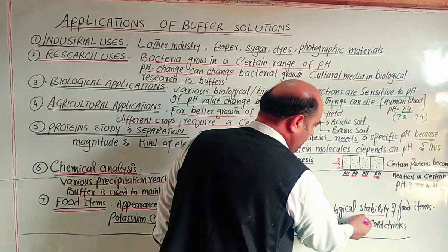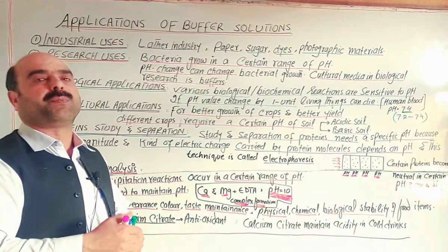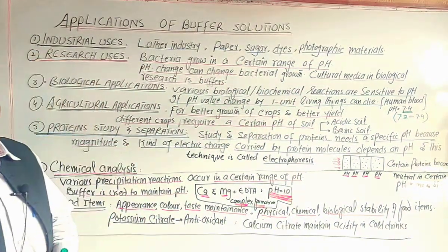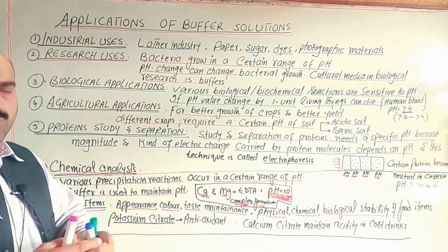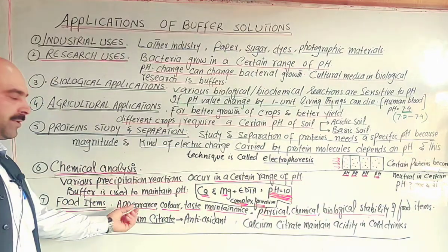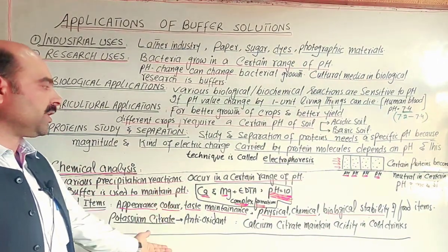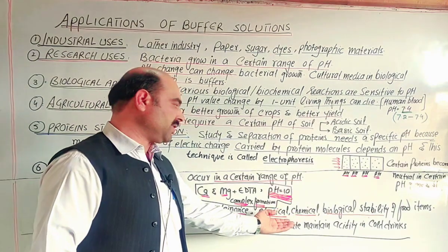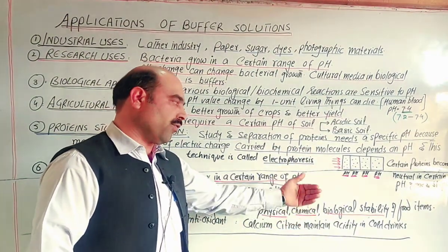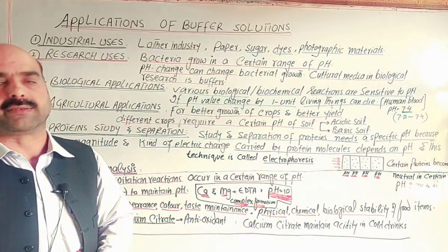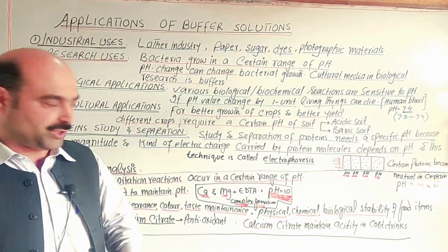Biological stability is also maintained by using buffer solutions so that fruits, vegetables, and similar foods do not spoil. Their appearance, taste, physical state, and chemical composition do not change. Biological organisms and microorganisms cannot attack the food, and it does not spoil.